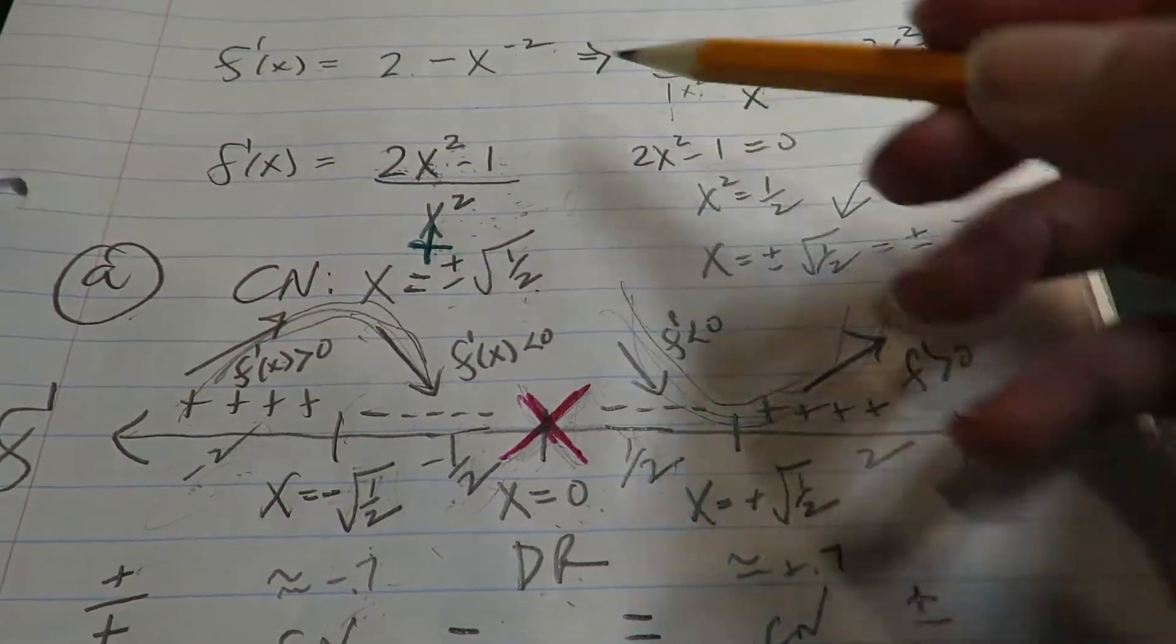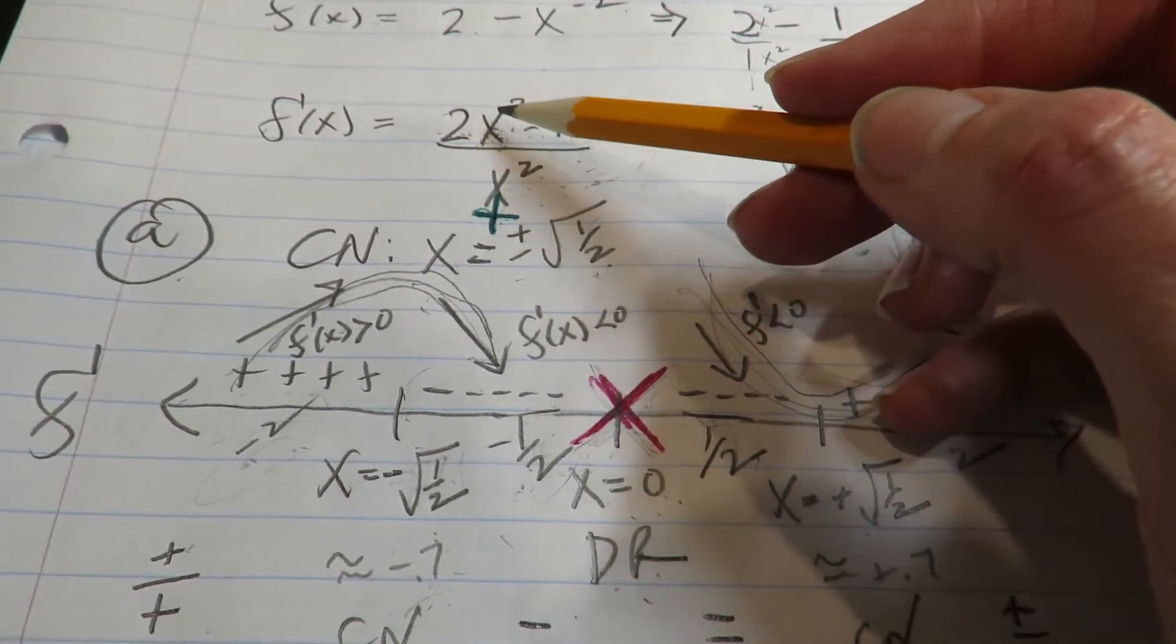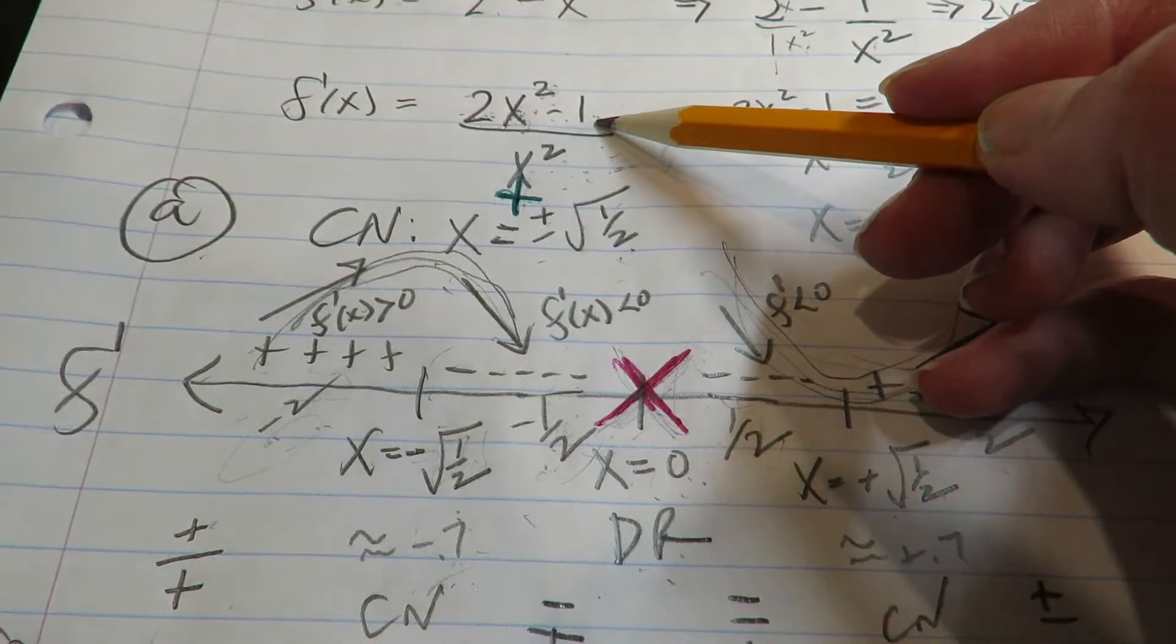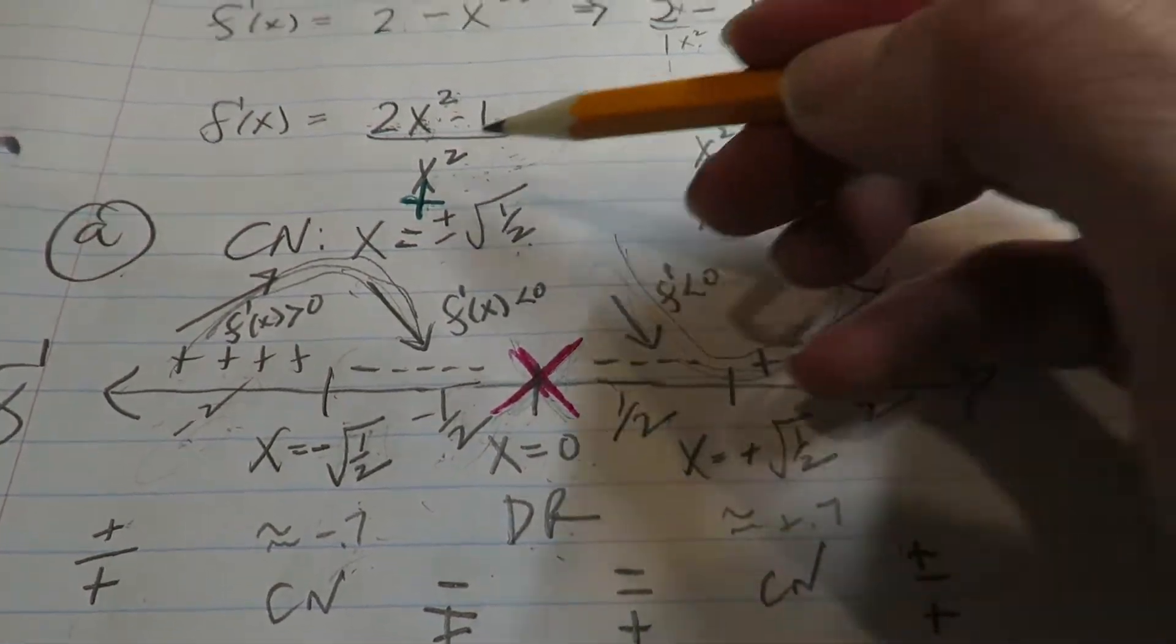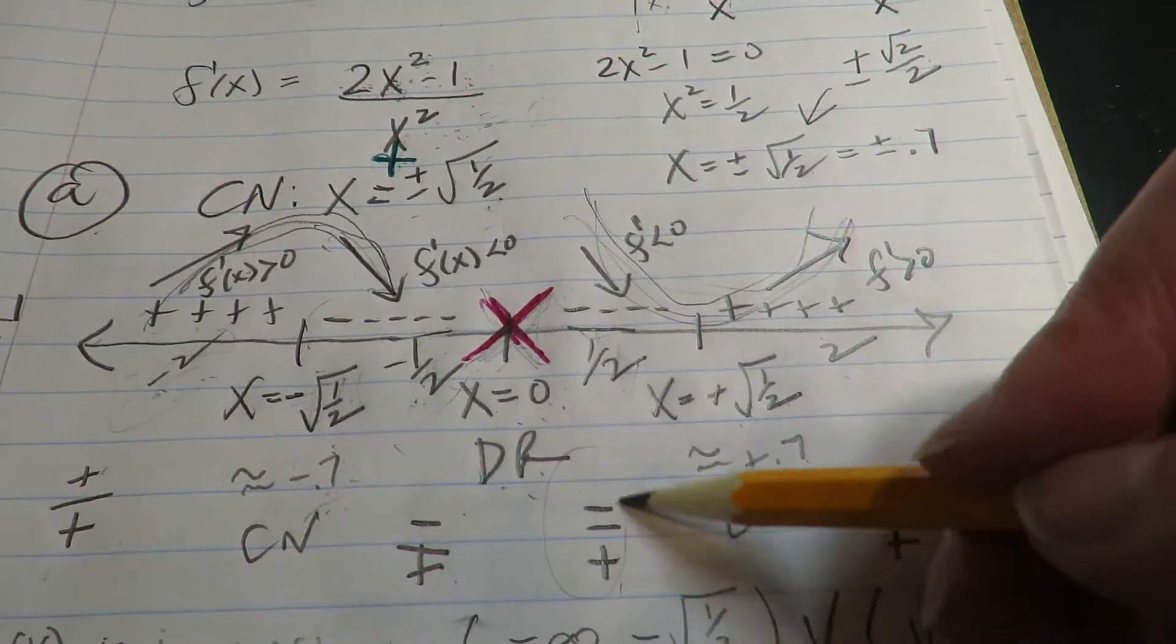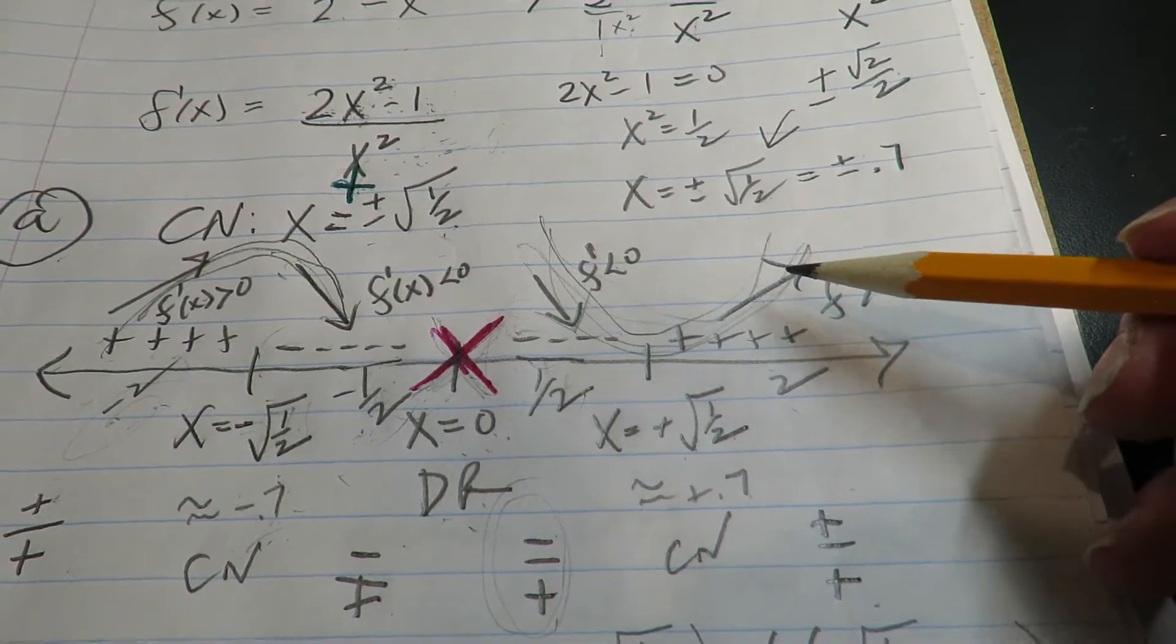Then I plugged in positive a half. So positive a half squared is a quarter. A quarter times two is a half. A half minus one is negative a half. So the numerator is negative. The bottom's always positive. So overall this fraction is negative. So the function is decreasing. The derivative is negative.